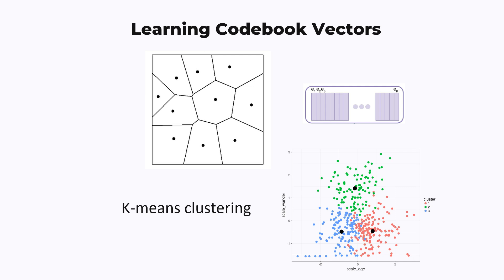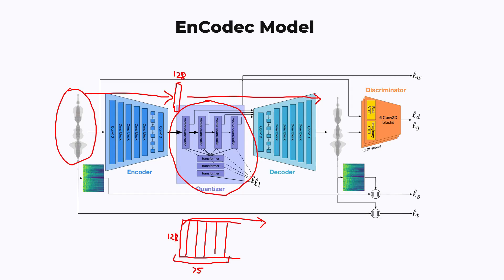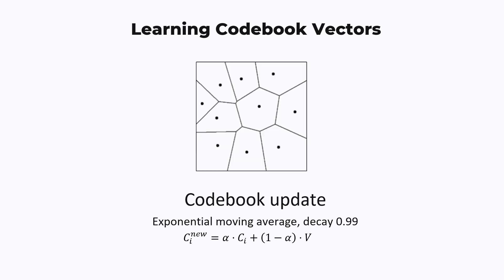What works better is if we learn the model and the quantizers at the same time. You can imagine some kind of training loop where they feed it a bunch of data and the model learns through the data. And at the same time, while you're doing this, you're learning the quantizers — the codebook vectors and the mapping between the indices and the code vectors. There are two parts to this. The first is the codebook update.